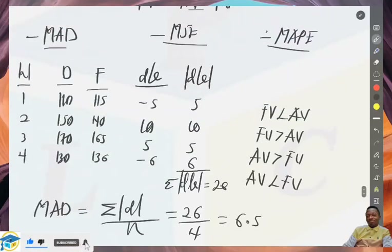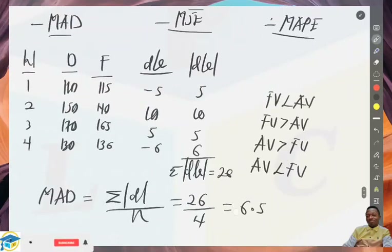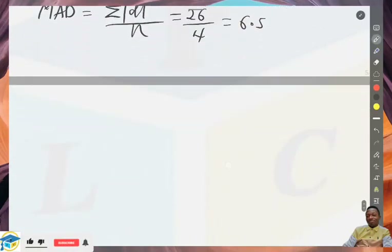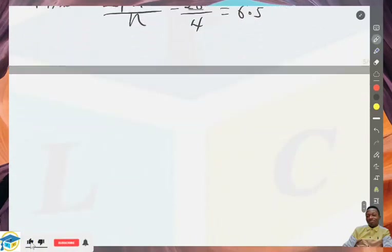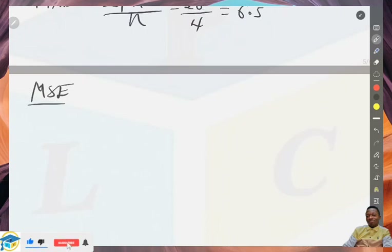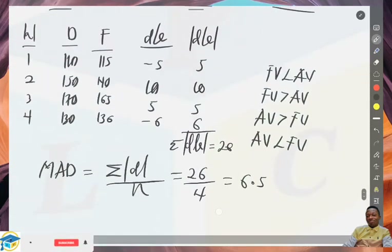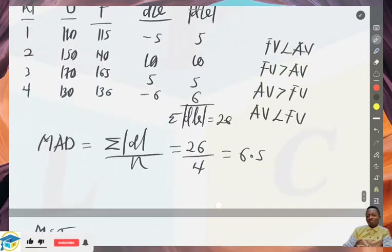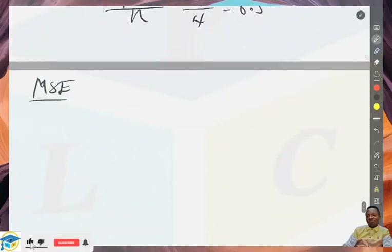Once we know how to calculate the Mean Absolute Deviation, we can move on to the Mean Square Error. Here too we find the error or the deviation, then we square it, and then we find the mean. We use the same information used earlier to compute this.